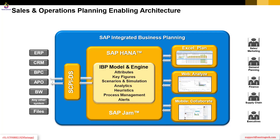Looking at the architecture, if we are talking about Sales and Operations Planning enabled within IBP, there is a dedicated planning area which SAP has provided as out-of-box functionality — we call it the Unified Planning Area. It covers standard predefined master data, standard predefined key figures already available, and a logical sequence of demand planning or supply review. On top of that, we have the freedom to create any additional master data or attributes.